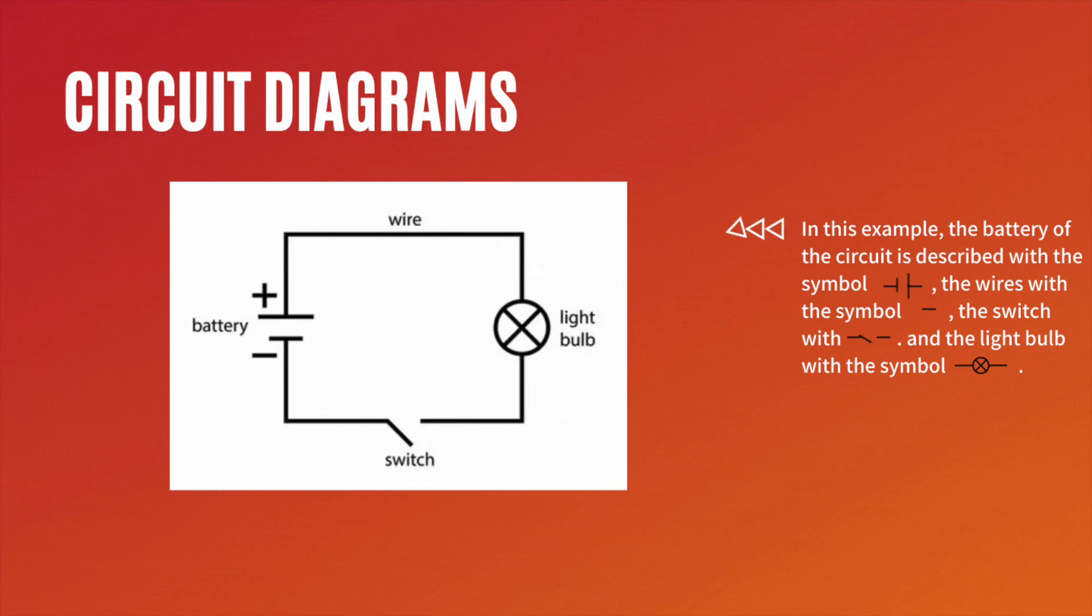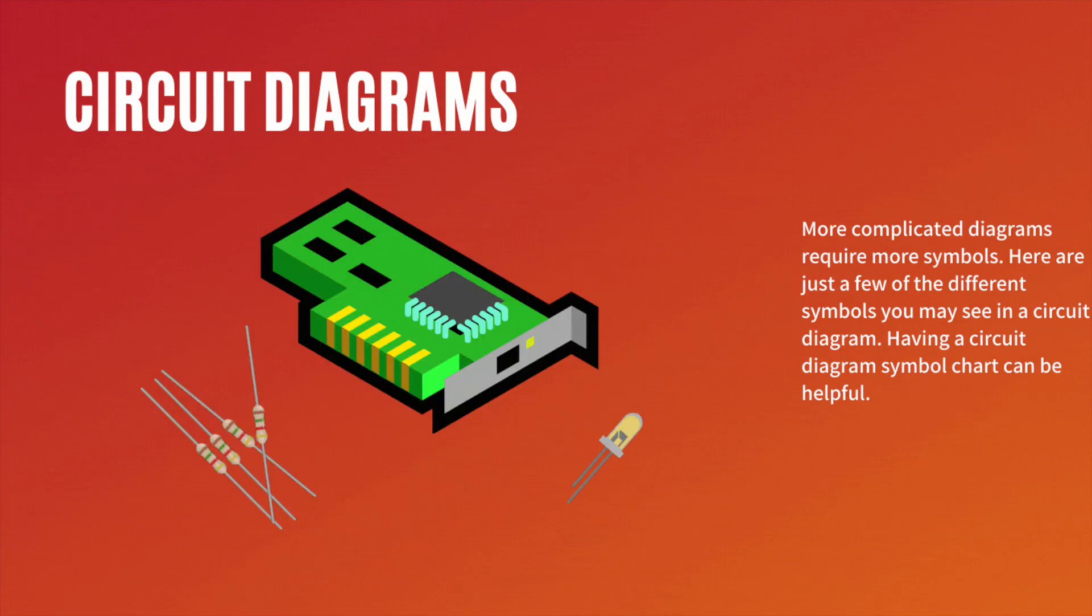The switch is a solid line with a break in it, showing that this switch is left in the open position. And the light bulb is represented with a circle with an X through it. Each symbol is appropriately labeled so that it's easy to read this diagram.